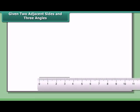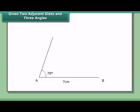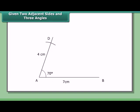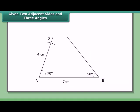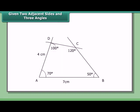Step 1: Draw line segment AB = 7 cm. Draw angle A = 70° using a protractor. With A as center and radius 4 cm, cut an arc on the line to mark D. At B, draw an angle of 50°. At D, draw an angle of 100° with a protractor. Let the arms of these angles meet at C. ABCD is the required quadrilateral.